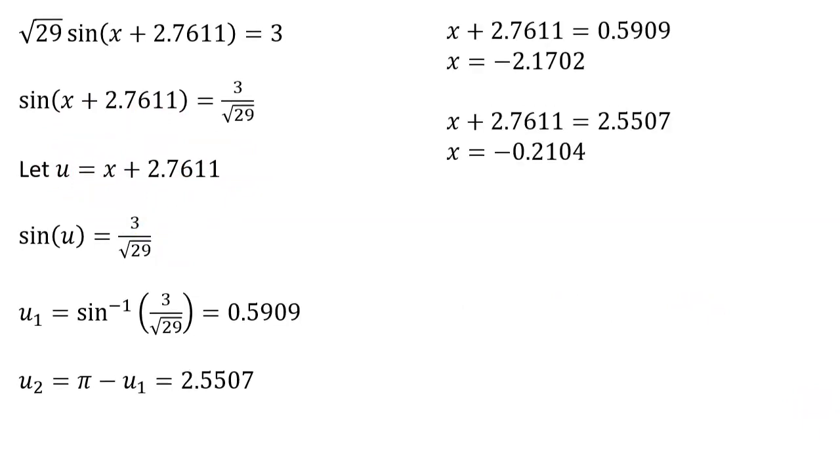So first thing we would do is replace the u here with x. So instead of u equals 0.5909, we've got x plus 2.7611 equals 0.5909, and that gives me x is negative 2.1702.